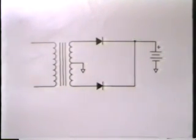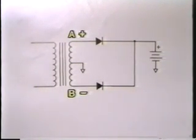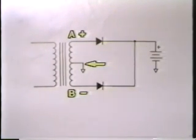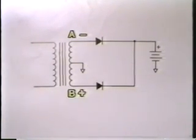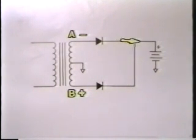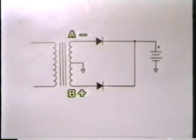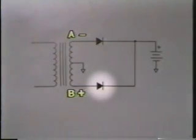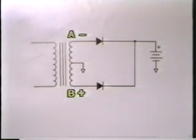Let's trace the current flow in this circuit. When point A is positive and point B is negative, the current flows through this diode and into the positive side of the battery. The return path is through ground and back into the center tap of the transformer. When the polarity of the transformer is reversed and point B becomes positive, the current flows through this diode — notice that this diode is connected right back up to the positive side of the battery. Instead of simply cutting off the current, this diode acts as a detour and brings the current flow back up into the battery. The return path again is through ground and back into the center tap.